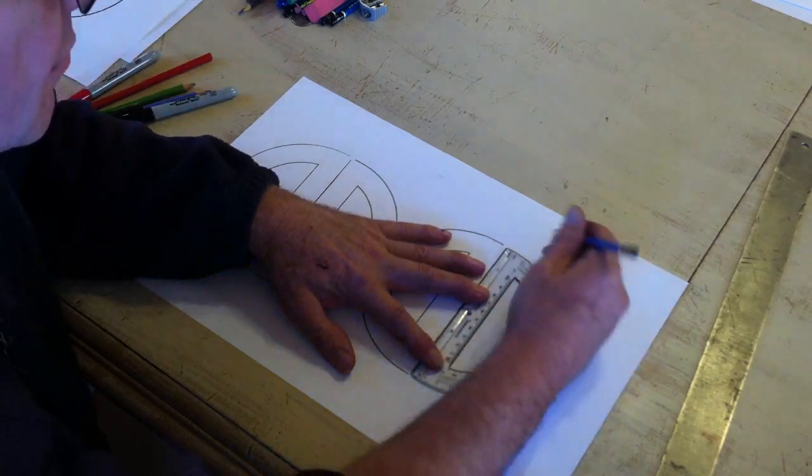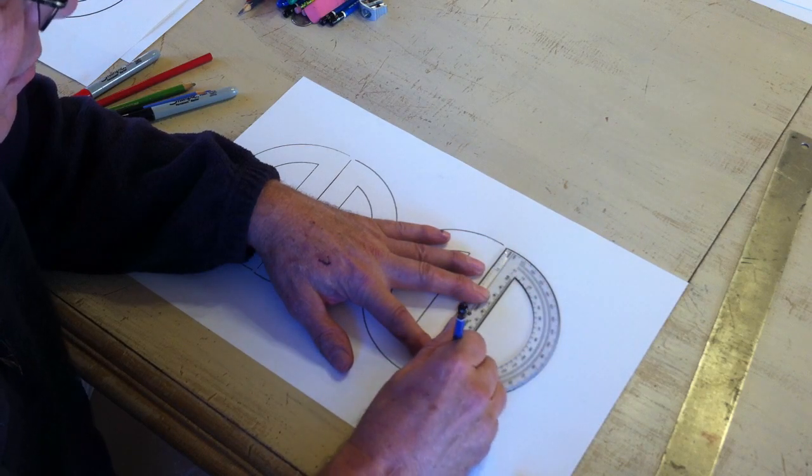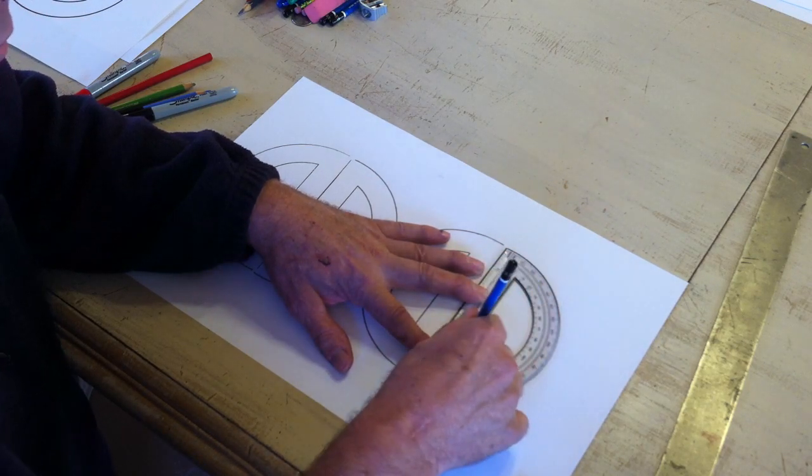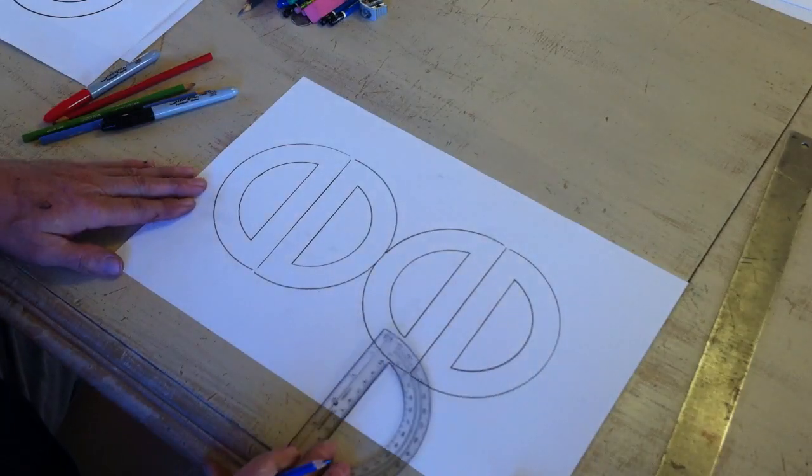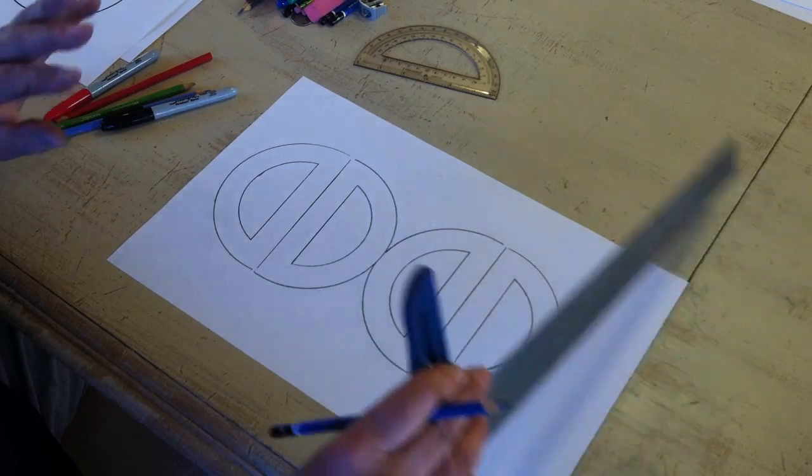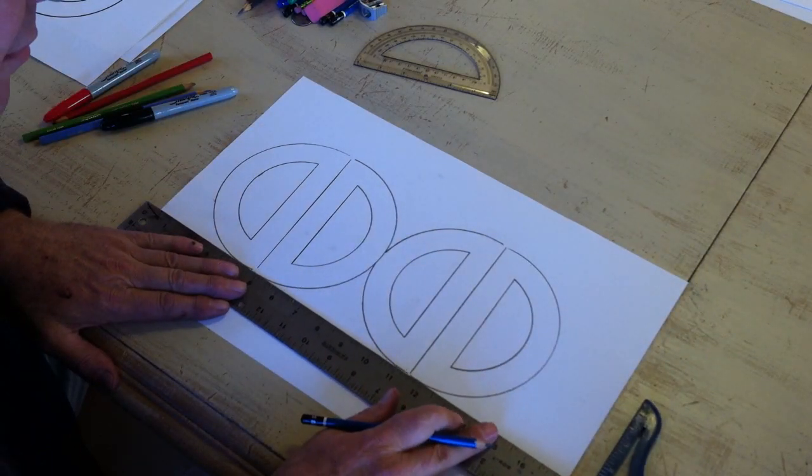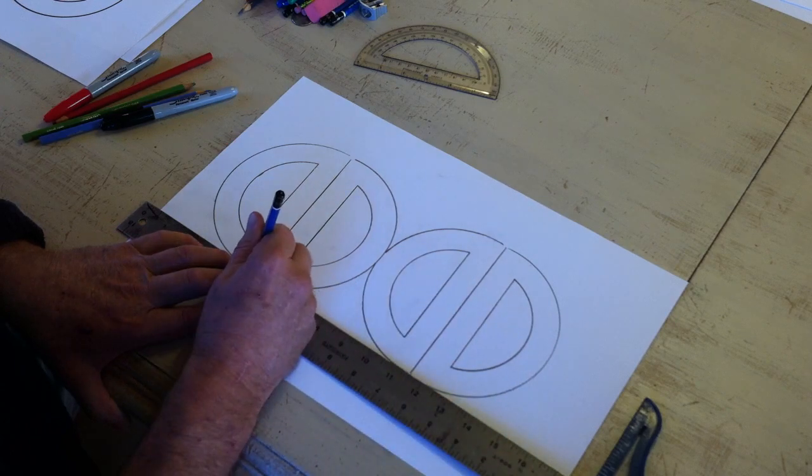After developing your composition, use a ruler and a compass to make your hard edge outline of your final design. Then once you have finished your design and you are satisfied with the way your design looks, you want to outline it in black marker.